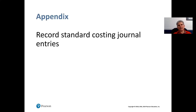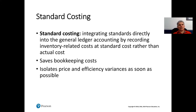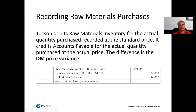From here we go to recording standard cost journal entries. Standard costing involves integrating standards directly into the general ledger by recording inventory-related costs at standard costs rather than actual costs. This helps save bookkeeping costs because we can do that more efficiently, and it isolates the price and efficiency variances as soon as possible — as soon as we're recording everything, we'll see those variances. Let's go through the series of transactions and recordings.